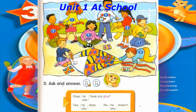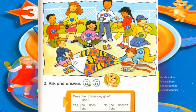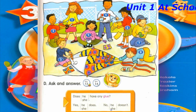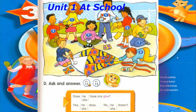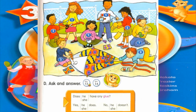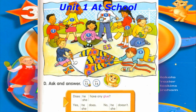Number 5: Does he have any tape? No, she doesn't. Number 6: Does she have any tape? No, she doesn't. Number 7: Does he have any tape? Yes, he does. Number 8: Does he have any tape? No, he doesn't.